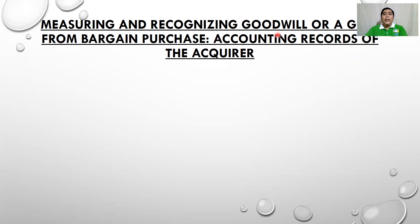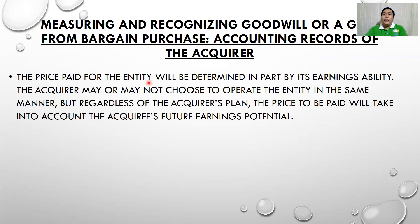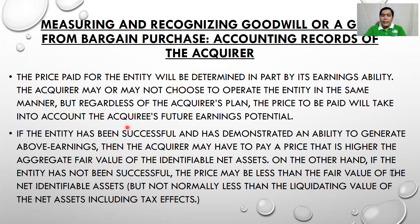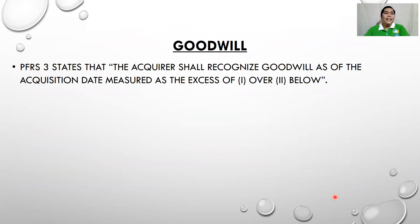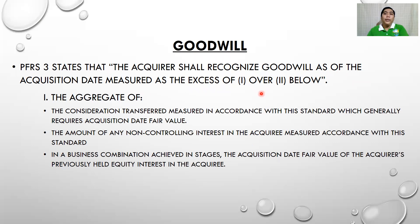Now, measuring and recognizing goodwill. The price paid for the entity will be determined in part by its earnings ability. The acquirer may or may not operate the entity in the same manner, but regardless, the price will take into account the acquiree's future earnings potential. If the entity has been successful, the acquirer may have to pay a price higher than the aggregate fair value of its identifiable net assets. According to PFRS 3, the acquirer shall recognize goodwill as of the acquisition date measured as the excess of item 1 over item 2.